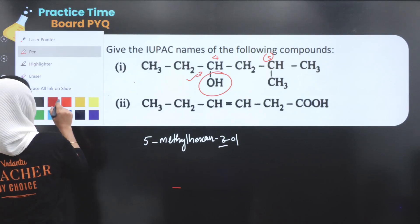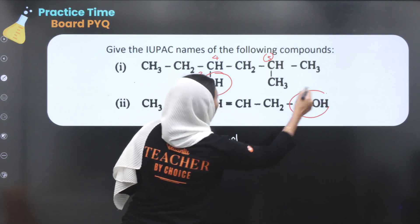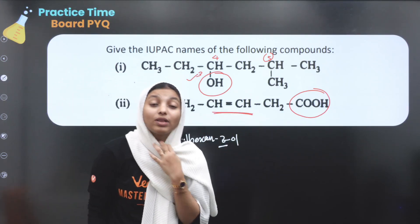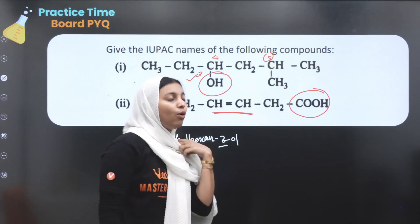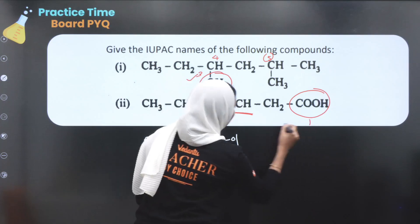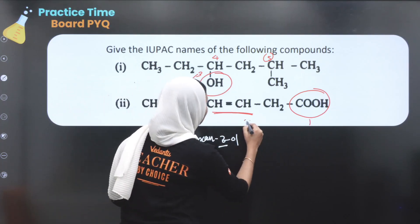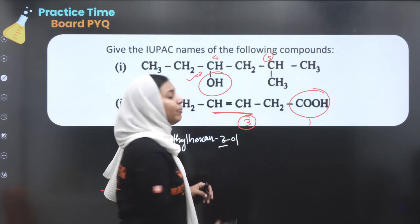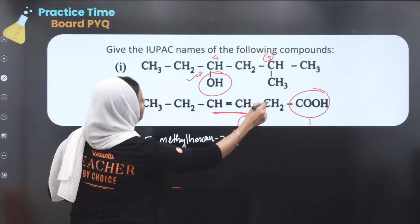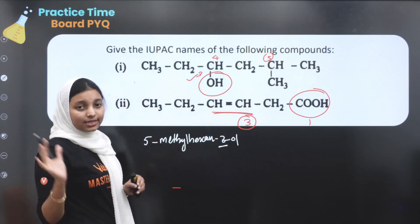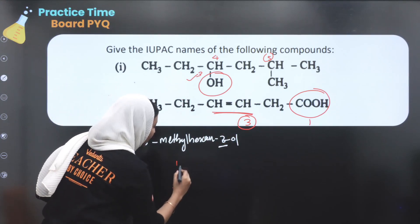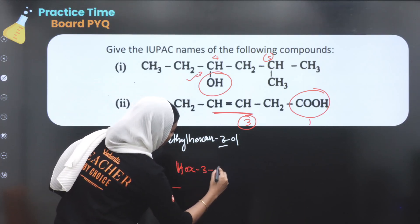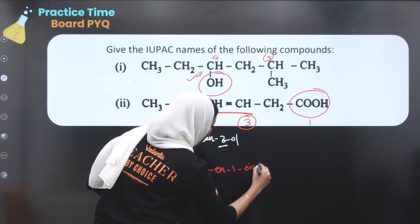Next, we will take a look at COOH and double bond here. COOH is the highest priority functional group. We will start here — this is the third carbon compound. We will take a look at HX, 3-en-1-oic acid.